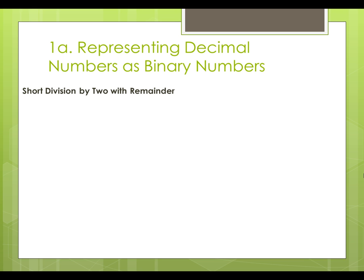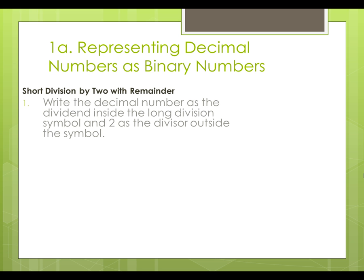Firstly, write the decimal number as the dividend inside the long division symbol, and 2 as the divisor outside the symbol. Suppose we have a decimal number 181 and we are going to convert it to binary. We can write the number 181 as the dividend inside the division symbol, and write the number 2 as the divisor outside the symbol.